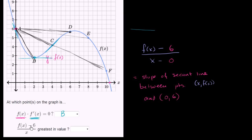So when is this expression greatest in value? When we're looking at point D. At point D, x is equal to 6, and f of x looks like about 5 and a half or maybe 5 and a third. So this becomes f of 6 — roughly 5.5 — minus 6, over 6 minus 0. That's how we maximize this value. Point D gives the least negative slope of the secant line.